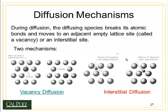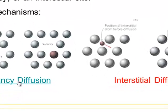There are two basic diffusion mechanisms — two ways that impurity atoms can move through a crystal. The first is called vacancy diffusion. In vacancy diffusion, an impurity atom moves from one lattice position into the vacancy site next to it.